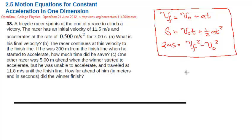Let's say this is the victory line here — there's the victory flag. When you cross that line first, you win the race.